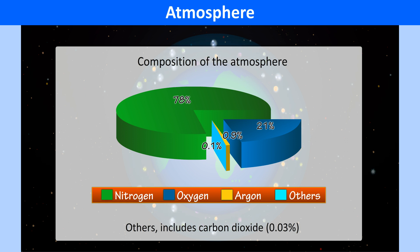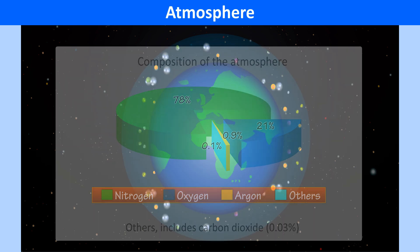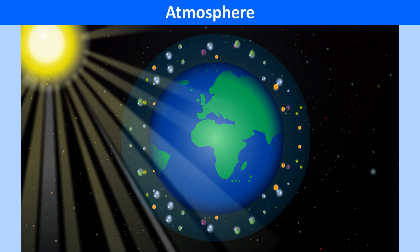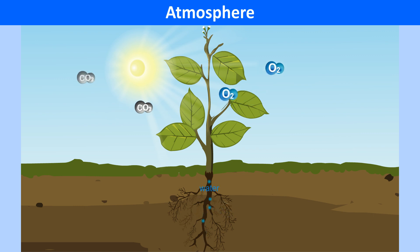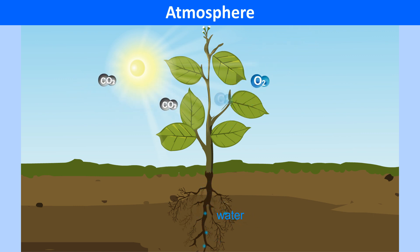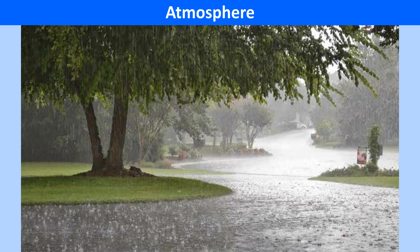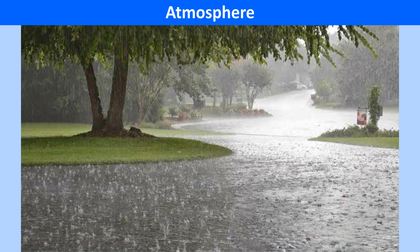Living organisms breathe in oxygen from the air and breathe out carbon dioxide into the air. The atmosphere also protects us from the harmful rays of the sun. Plants take their supply of carbon dioxide and nitrogen for photosynthesis from the atmosphere. We get some water supply in the form of rain and snow from the water vapour present in the atmosphere.